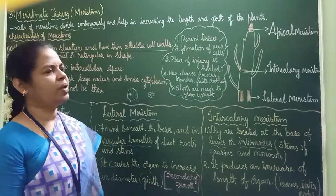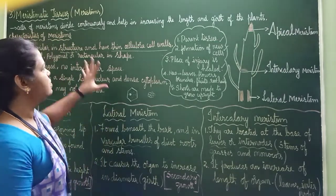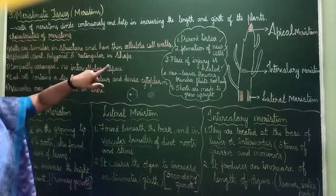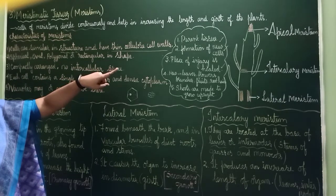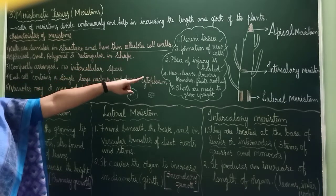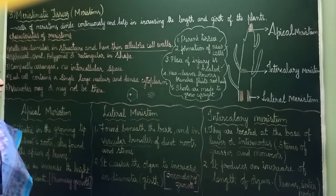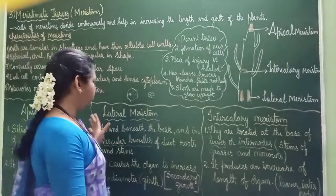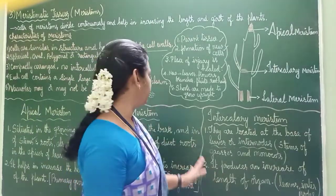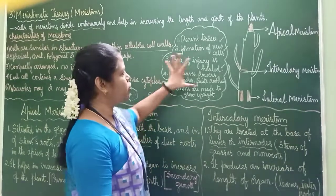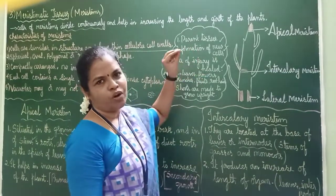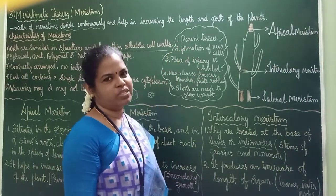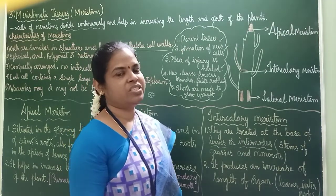So to recap: first, meristematic tissue characteristic features; then the diagram showing apical meristem, intercalary, and lateral; then the three different types of meristems — apical, intercalary, and lateral; and also five important functions of meristematic tissue.